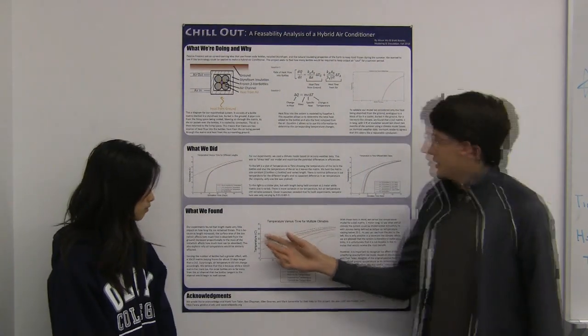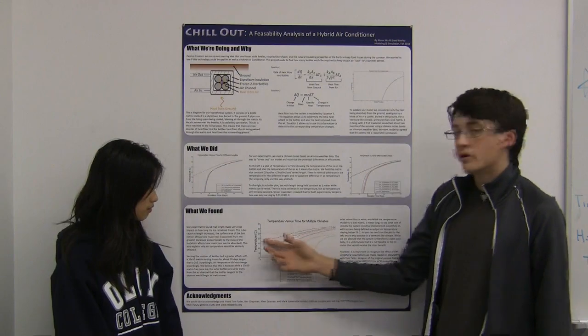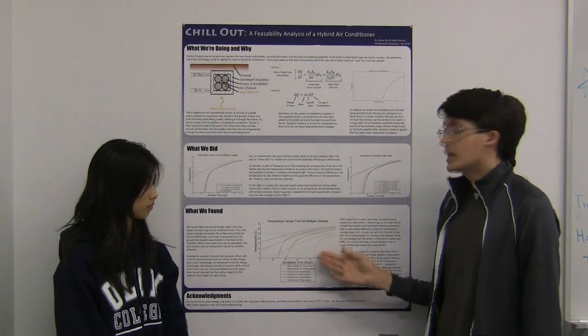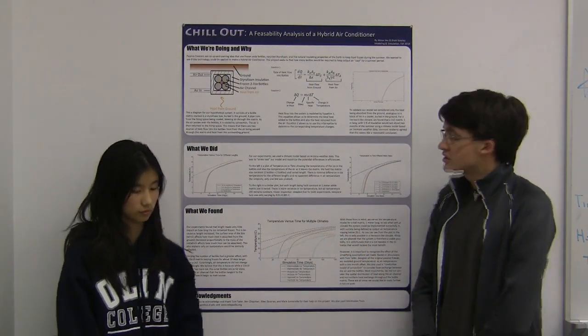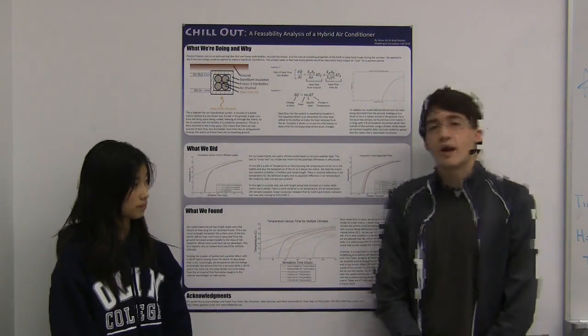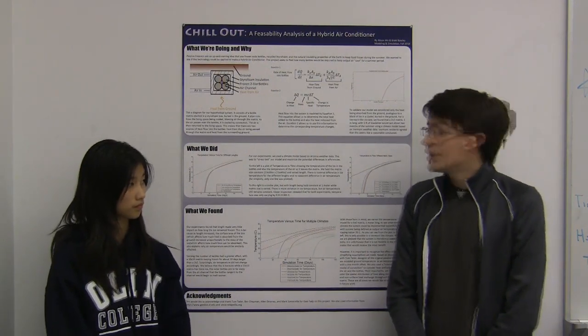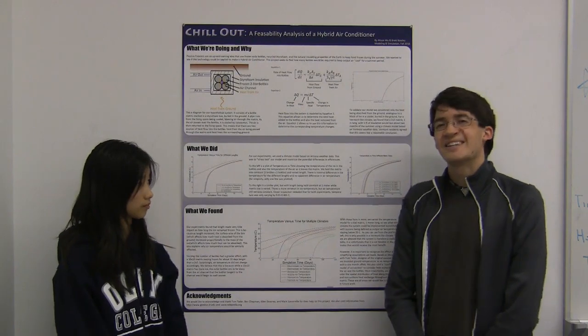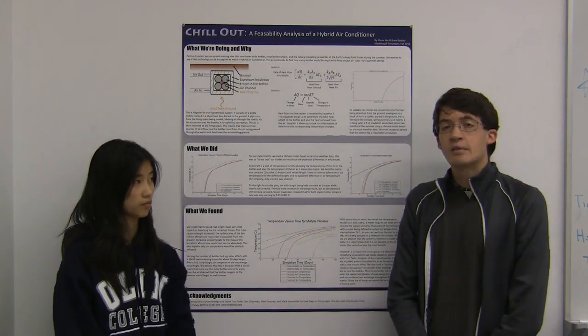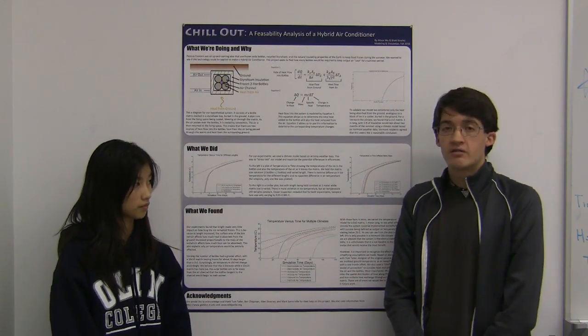This graph shows that in order for air temperature to remain below 25 degrees Celsius, the climate needs to be approximately that of Vermont. While this is good news in that it shows our idea for a hybrid air conditioner does work, it is unfortunate that it suggests that it is not a viable solution for the climate that would reap the greatest benefit.